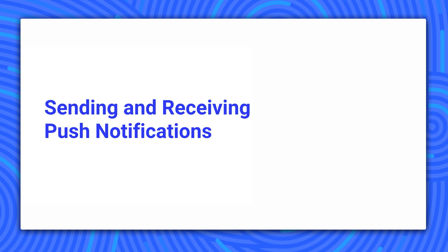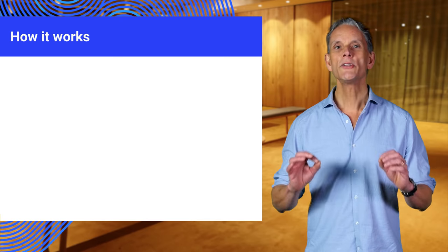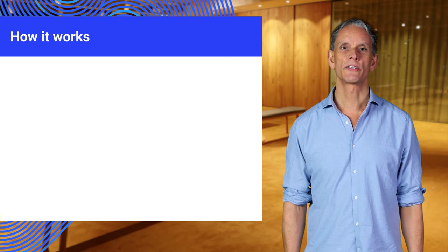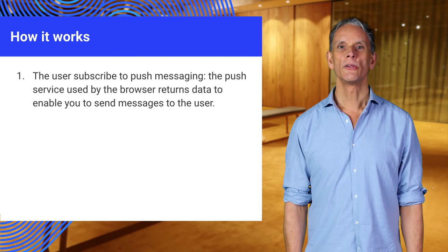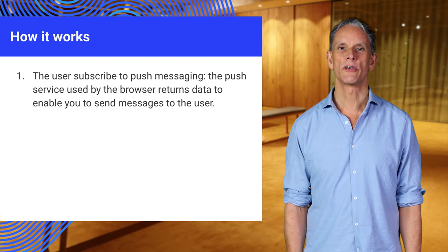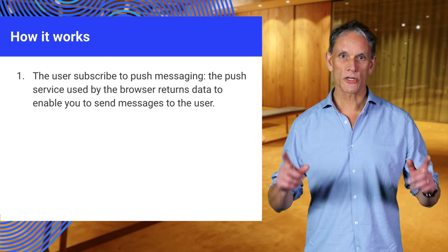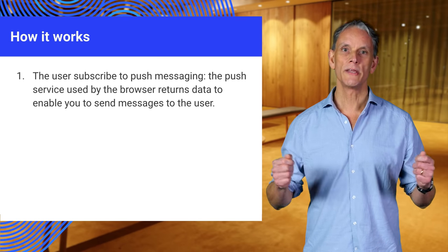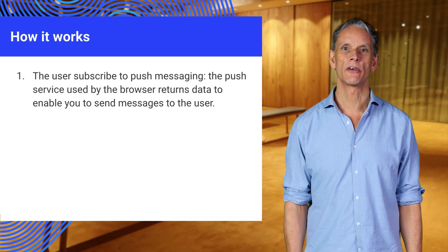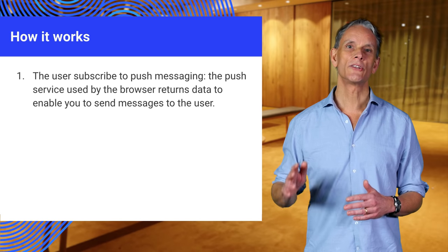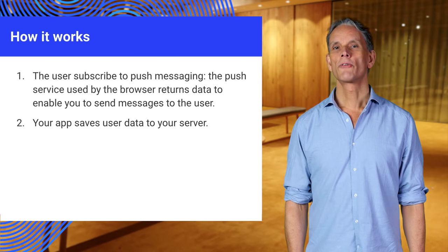Now let's see how you send push messages from your server and handle incoming messages on your client web app. Each browser manages push notifications through its own system called a push service. When a user grants permission for push on your site, you subscribe them to the browser's push service. This creates a subscription object that includes a public key to enable messages to be encrypted and an endpoint URL for the browser's push service, which is unique for each user.